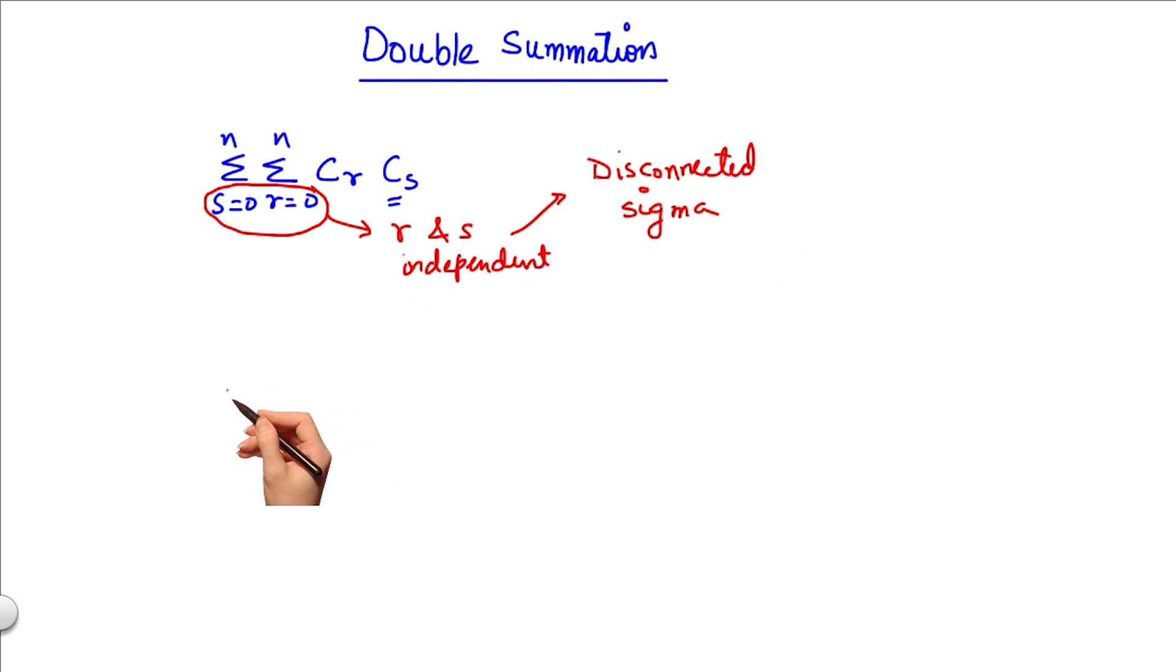Now since c is independent of r, I can very well write this as summation s from 0 to n c multiplied by summation c r, r varying from 0 to n. Now I know summation of c r, r varying from 0 to n is 2 to the power n.